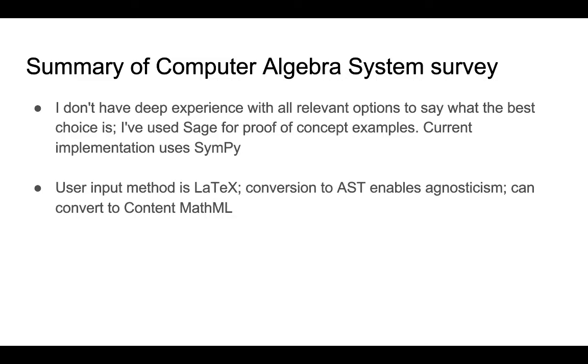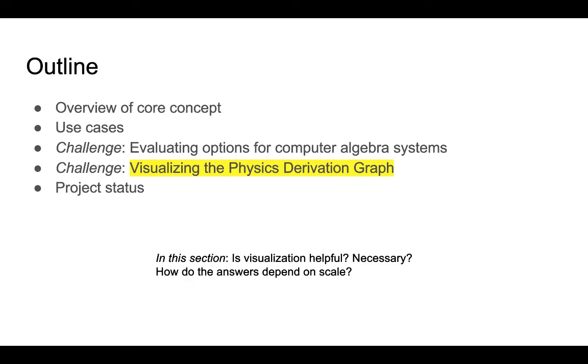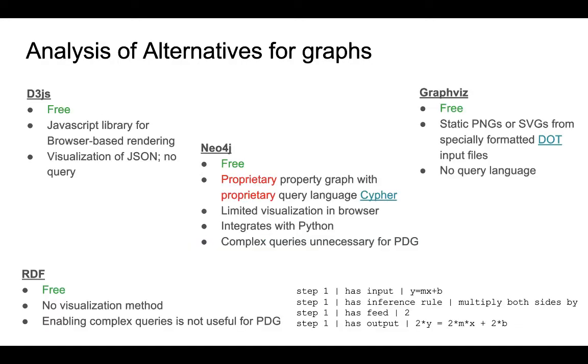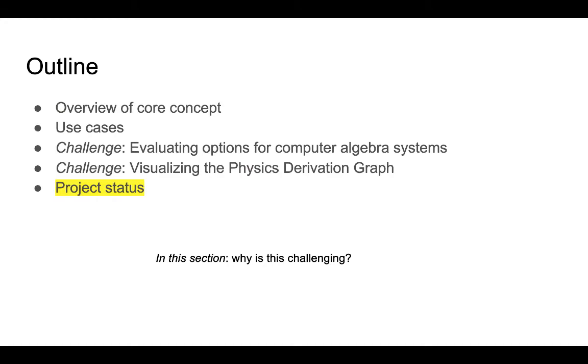The takeaway for the computer algebra system aspect is that there are a couple good choices. Sage and SymPy to me are the best options. I'm currently using SymPy in the physics derivation graph. The input method currently that I'm using is LaTeX with some conversion to SymPy that needs user intervention. The computer algebra system was one aspect that is useful but challenging. I'm going to talk about visualization as a challenge. There's a whole bunch of options and some complexity in the trade-offs. I need three different types of nodes. I want to navigate that structure visually and have some way of the user providing input to that graph. My bias is towards free and open source software. D3JS and GraphViz both rise to the top for me. I'm using both of those.